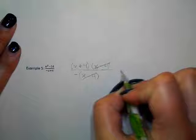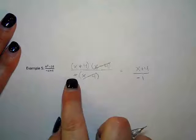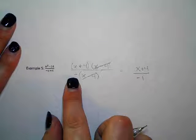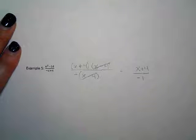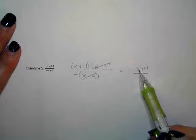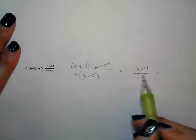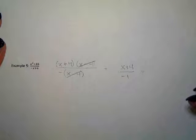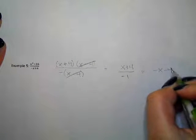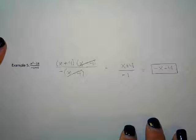That leaves us with X plus four divided by a negative one. Anytime you have just a plain negative sitting on the bottom, that's actually a negative one. Most people would not leave a one on the bottom of a fraction — they'd say you don't even have to write it as a fraction. If we divide by negative one, that changes the sign of both terms. So X plus four divided by negative one becomes negative X minus four.